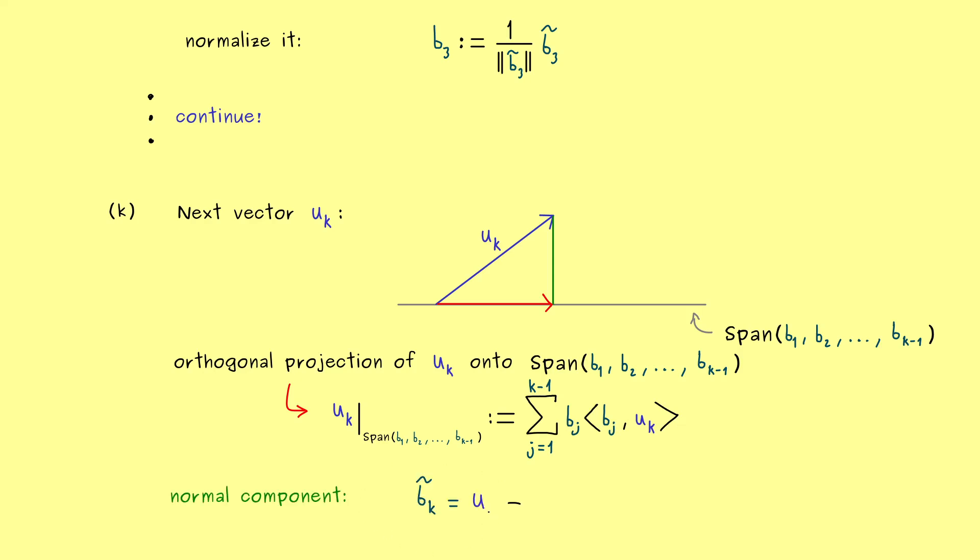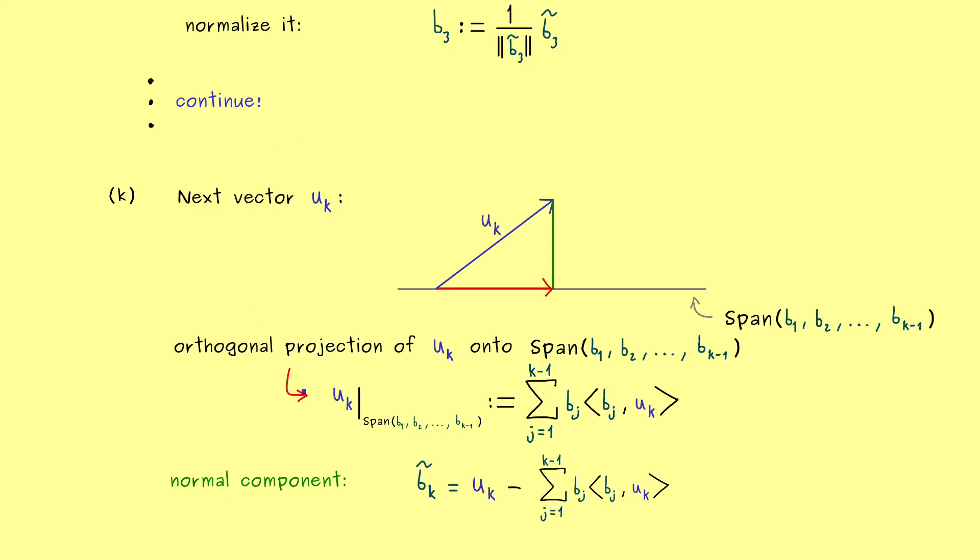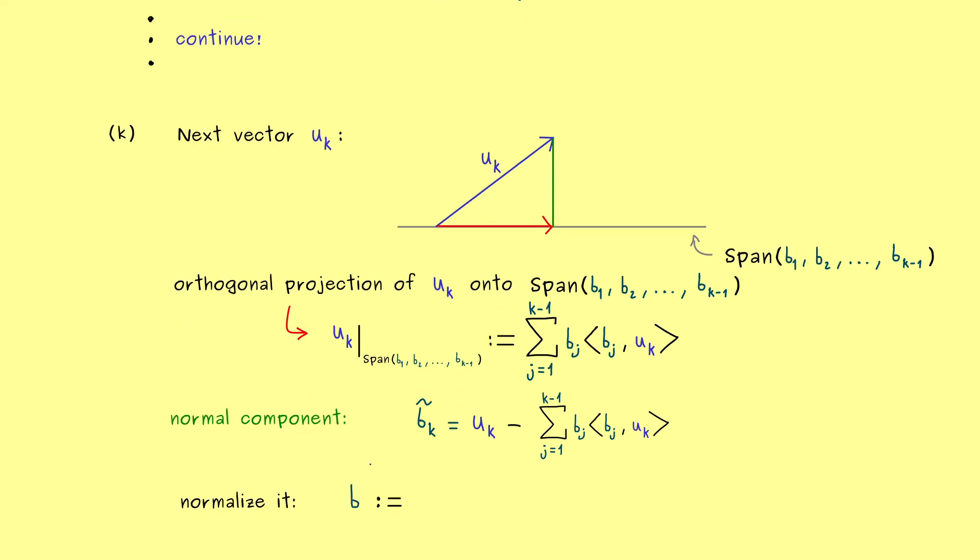And then we do the same thing as before, subtracting gives us the normal component. And also don't forget, the last step is normalization. And then this finally defines our bₖ. And this one is the last vector in the procedure. With that we have our full ONB.